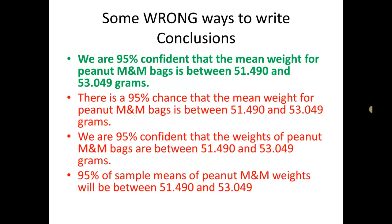Okay, and one more incorrect way: 95% of sample means of peanut M&M weights will be between 51.49 and 53.049. And again, our confidence interval just tells us where we expect the mean, mu, weight of peanut M&M bags to be. It does not say anything about future sample means or individuals like this one, and we definitely can't use the word chance. So all these are incorrect ways to write it. Hopefully that will help you out a little bit because definitely on tests and quizzes, they like to throw some of these tricky alternative ways of writing conclusions at you.